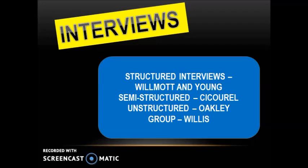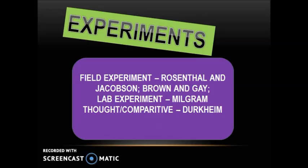Finally, experiments. Rosenthal and Jacobsen is a popular piece of research that has been replicated over 250 times. Brown and Gray used two actors — one Black, one White — with exactly the same qualifications, age, and gender. The only difference was their race and how they approached job interviews, to uncover racism. Both Rosenthal and Jacobsen and Brown and Gray cannot ensure all variables were accounted for, so some choose lab experiments instead. Milgram, while not strictly sociological research, allows you to explain the practical, ethical, and theoretical issues of using a lab — and why sociologists often favour field experiments instead.